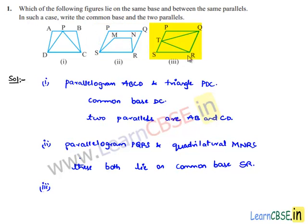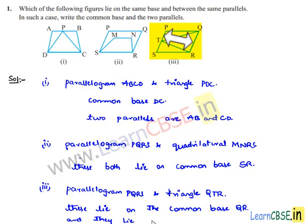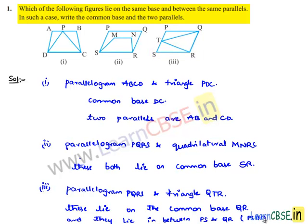Moving on to the third bit — we have two figures: parallelogram PQRS and triangle QTR. These lie on the common base QR and between two parallels PS and QR. Here we know that PS is parallel to QR in the parallelogram.